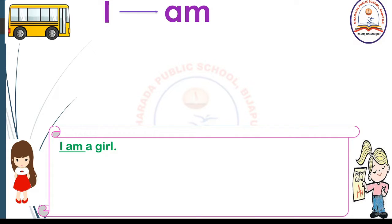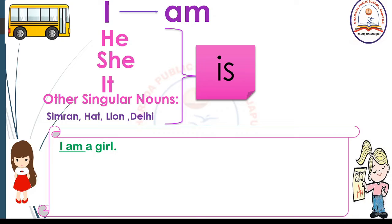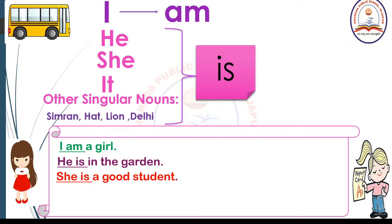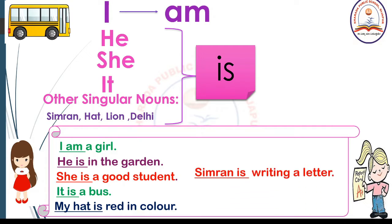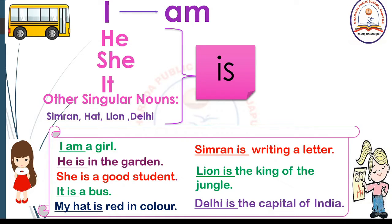Similarly, we use is with he, she, it, or other singular nouns like Simran, hat, lion, Delhi. For example: he is in the garden. She is a good student. It is a bus. My hat is red in color. Simran is writing a letter. Lion is the king of the jungle. Delhi is the capital of India.